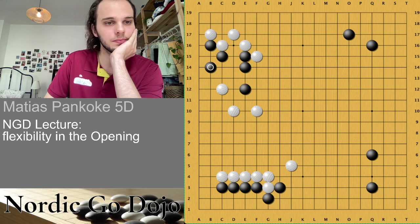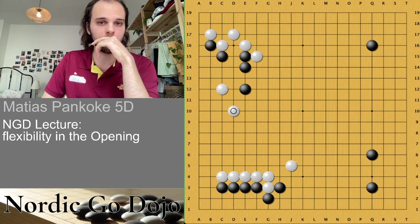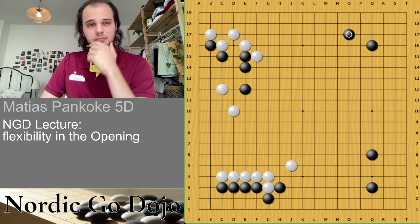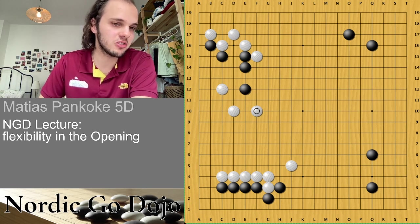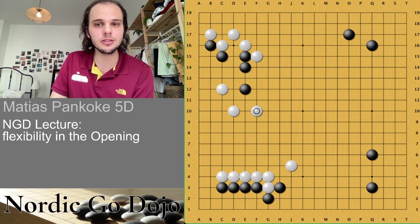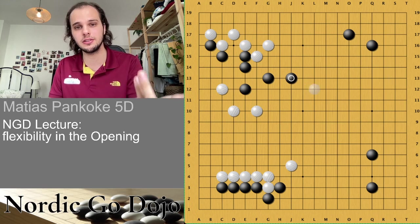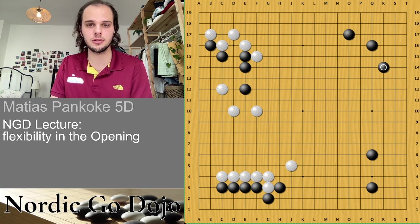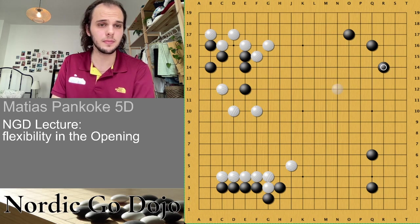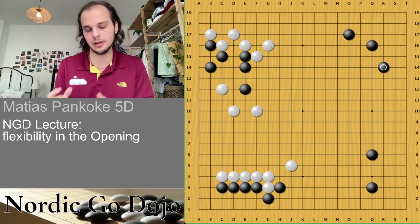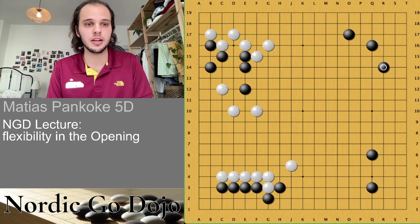Black used a very nice technique of tenuki-ing often in the opening to get more moves. You always have to evaluate: is this move really bigger than this jump? This jump is also quite valuable. You have to evaluate whether a second tenuki is more valuable. What black did was first threaten the cut, then tenuki. It's not like white lost a lot, but black got the kind of game he likes — having a weak group that can hardly be attacked.